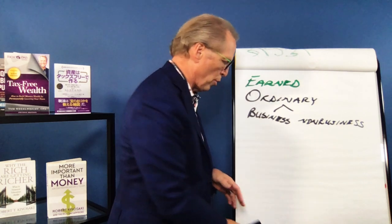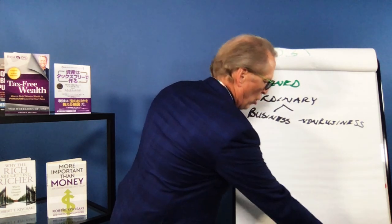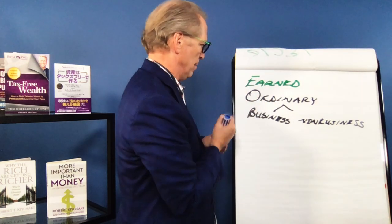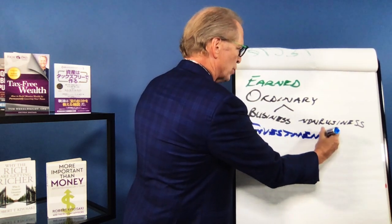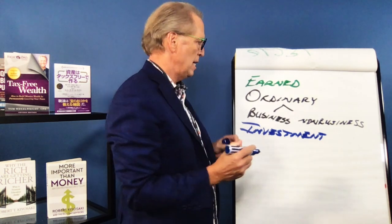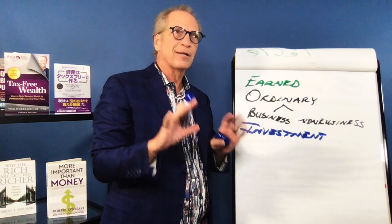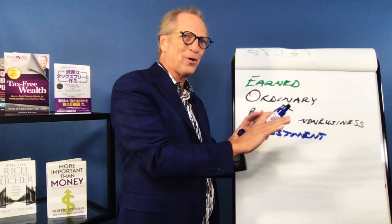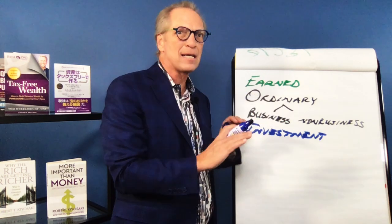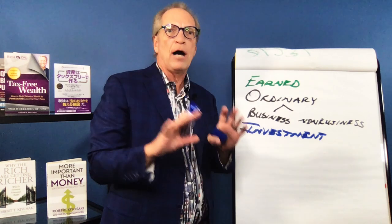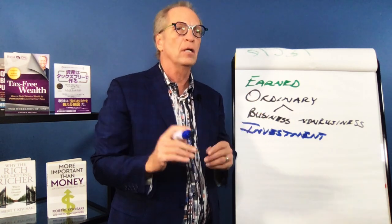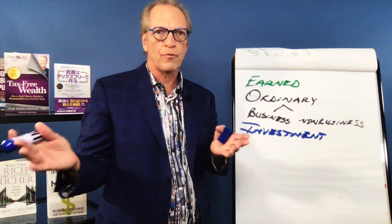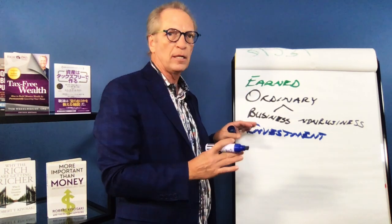Then we have investment income — things like interest, dividends, and capital gains. I'm not talking about capital gains from real estate; that's a Section 1231 gain, which is actually business income. I'm talking about pure investment income: dividends, interest, capital gains from stock, for example. Those are investment income.